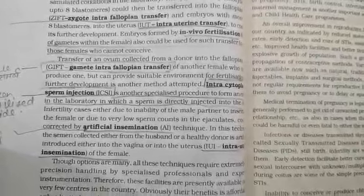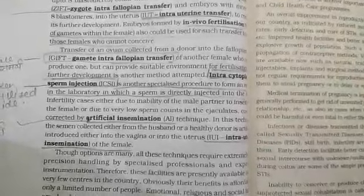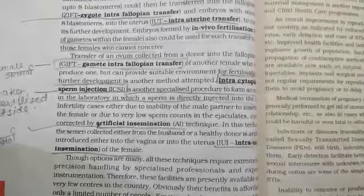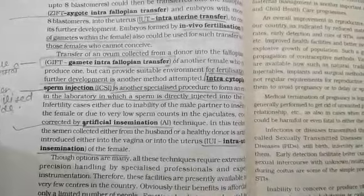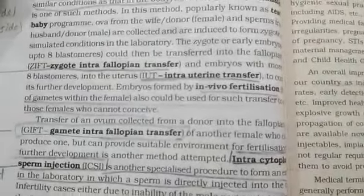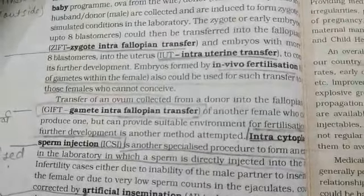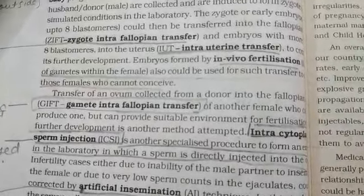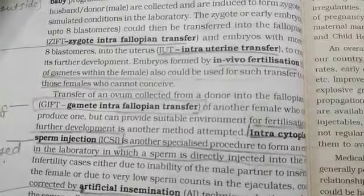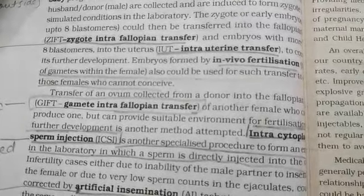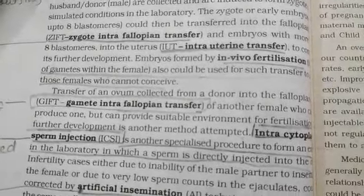Transfer of an ovum collected from a donor into the fallopian tube is called GIFT — Gamete Intrafallopian Transfer. Through this GIFT technique, if a lady is not getting pregnant after unprotected sex, then the male partner's sperm is inserted into the female. The female receives the sperm and embryo formation takes place.